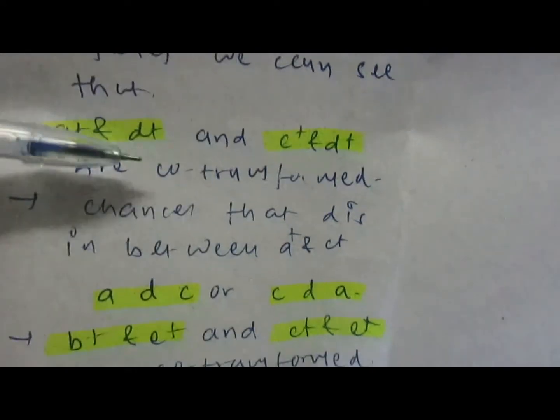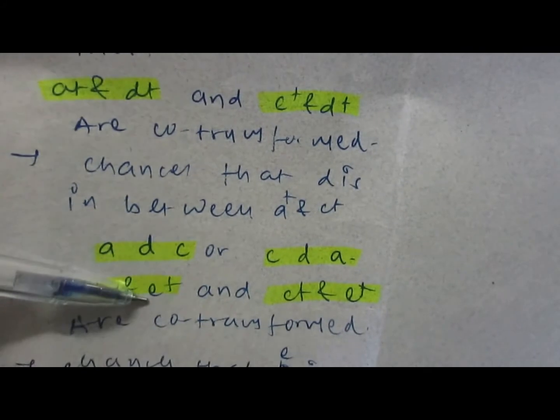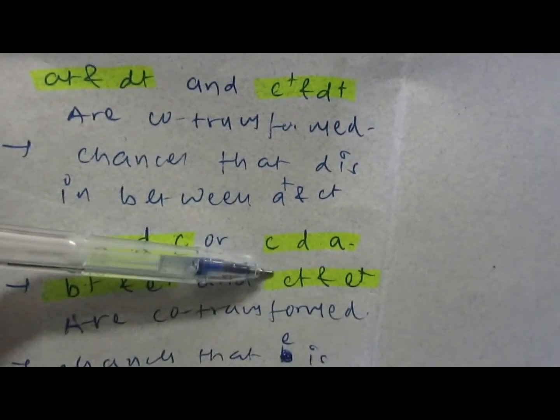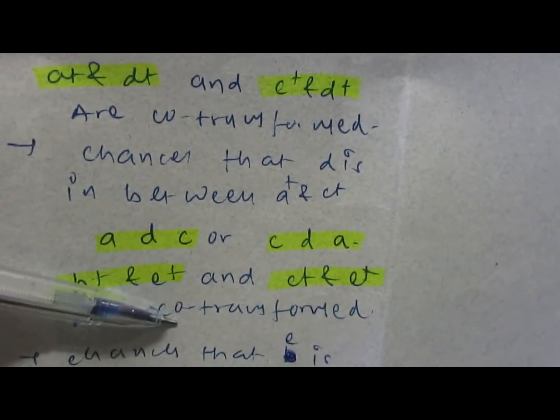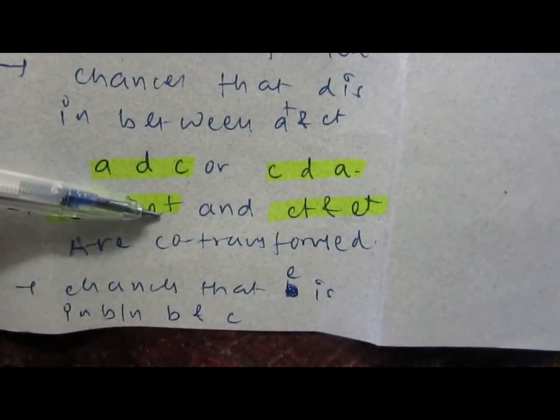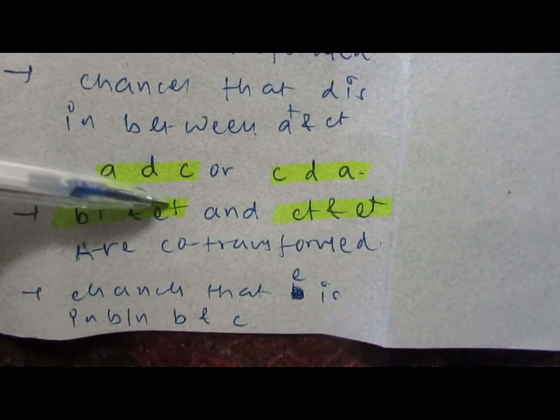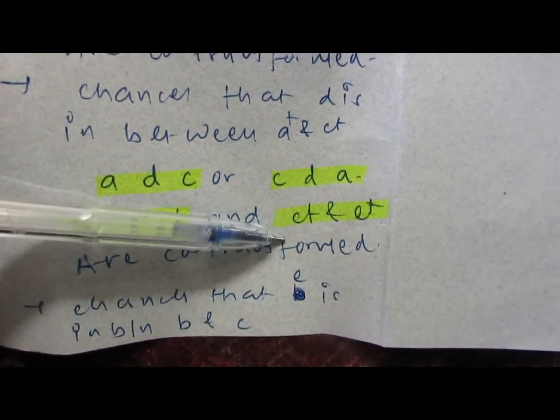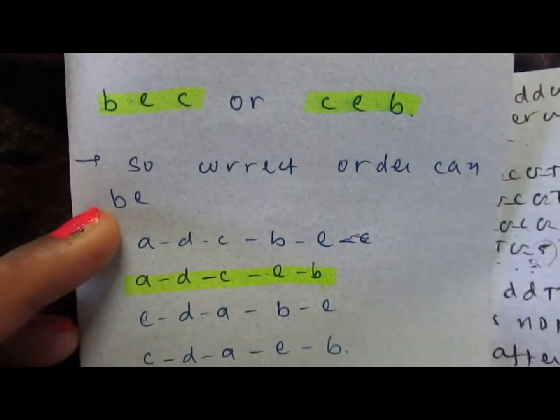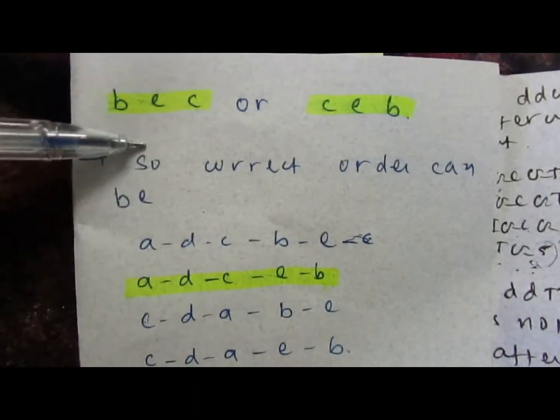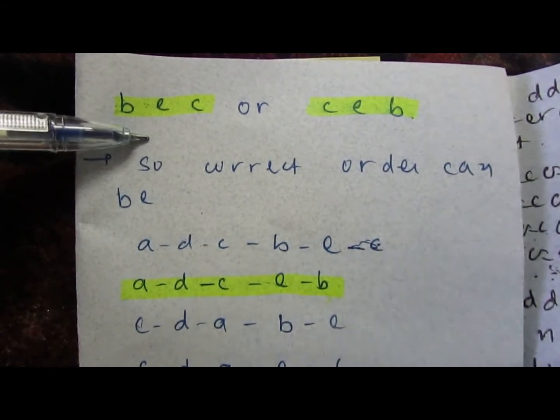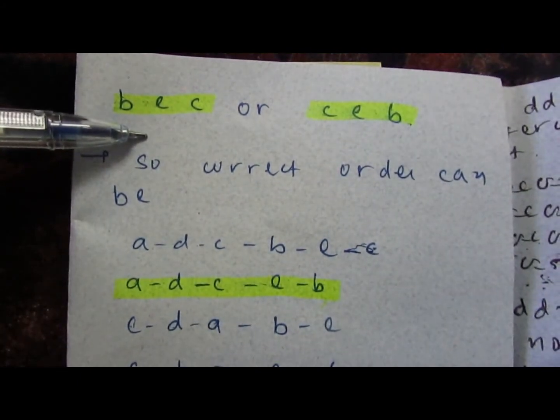Again, b+ e+ and c+ e+ are transformed together, so there are chances that e can be situated between c and b. So the correct gene order can be b-e-c or else c-e-b.